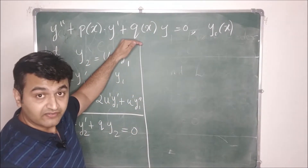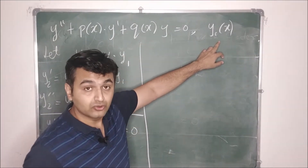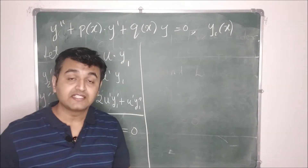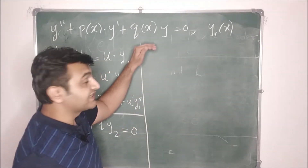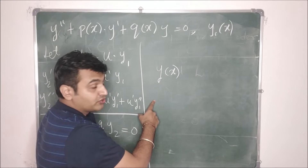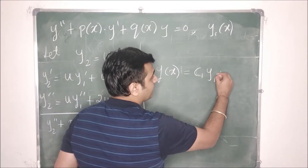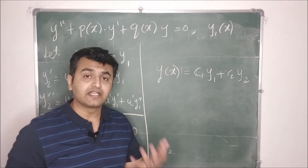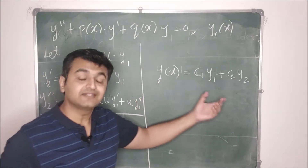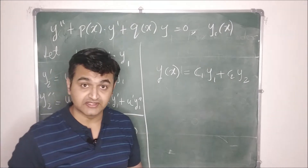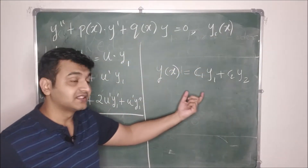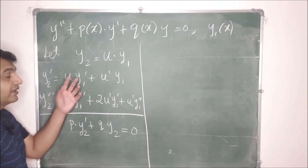We have a second-order linear differential equation where p and q are continuous functions of x. A solution y1 is given, and our aim is to find another linearly independent solution y2. From the previous lecture, the general solution of a second-order linear homogeneous ODE is y = c1·y1 + c2·y2, where y1 and y2 form a basis — they are linearly independent. Once we have y2, the general solution is fully determined.